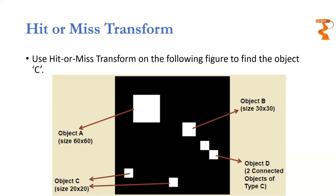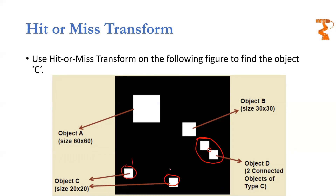What we want to do is find some object — some predefined object — in the whole image. For example, in this case, we want to find this object C. It is present over here and it is also present over here. But you can see it is also present over here, though there are two copies of it which are joined with each other if we are using 8-connectivity. So we have only object number 1 and object number 2. This other shape is not our object — it is a different object, which is why it has been labeled as object D. So, how can you find object C in this image?